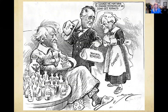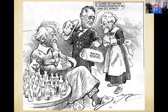Looking at a political cartoon: Franklin Roosevelt is the doctor, Congress is the nurse, and Uncle Sam — represented by a sick old man with stars on his legs and 'U.S.' on his slippers — sits in the chair. On the table is all the medicine of the first New Deal programs. Roosevelt tells Congress: 'Of course, we may have to change remedies if we don't get results.' He's saying that all of these programs were put in place within a hundred days, and if they don't work, they'll come back and try different solutions.